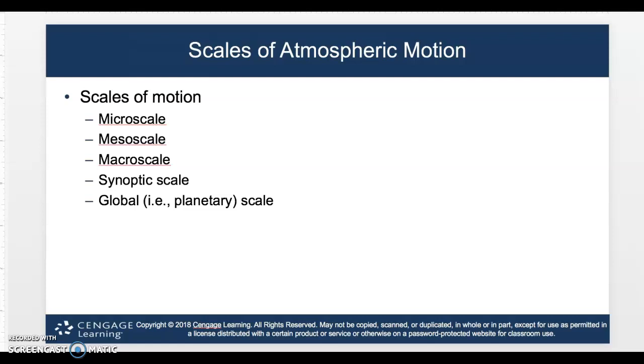Your neighborhood might be a microscale. Mesoscale could be something around your region or county. Macroscale can be something around your state. Synoptic scale is generally around your nation, and you see the national weather maps. That's a synoptic scale, and then of course we have global and planetary scales.